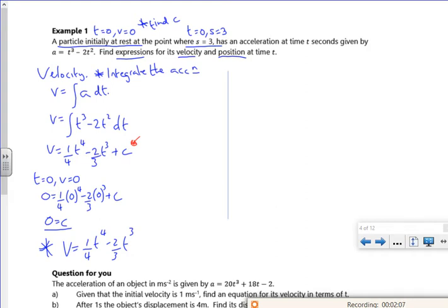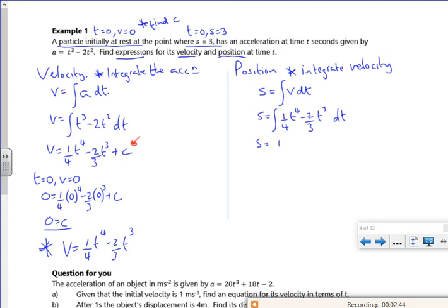Right, so now let's have a look at the position. So let's integrate my velocity to get back to the position. So s, or r, or x, whatever letter you use, will be the integral of my velocity dt. So it's the integral of my quarter t to the 4 minus 2 thirds t cubed dt. So what have I got there? So add 1 to the power, divide by the new power, so 1 over 20 of t to the 5.